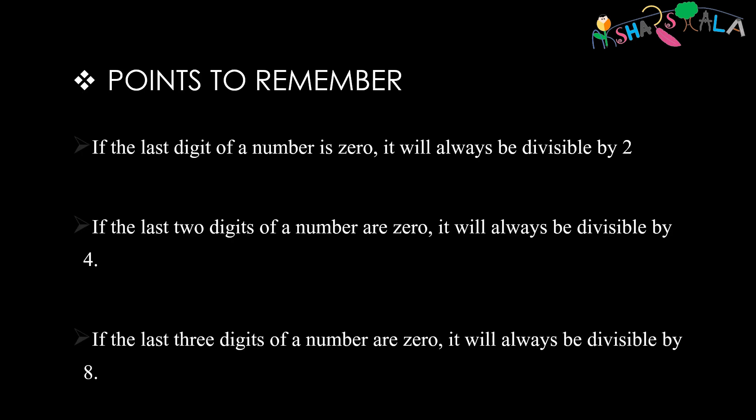In the end, I would like to tell you a few points that you should always remember. First, if the last digit of a number is 0, then it will always be divisible by 2. If the last two digits of that number are 0, then it will always be divisible by 4. And if the last three digits of that number are 0, then it will always be divisible by 8. I hope that this concept is clear.